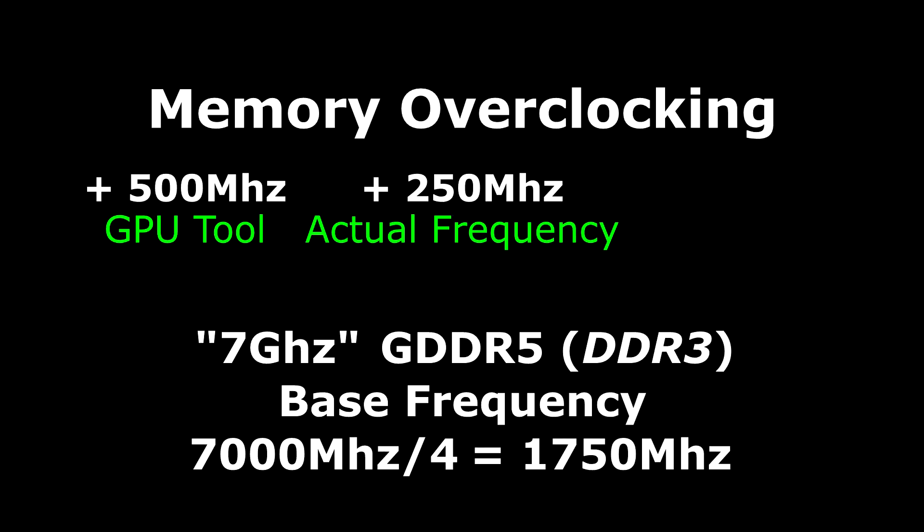When you overclock plus 500 megahertz you're getting two things: you're getting plus 250 megahertz shown in your overclocking tool, and an effective one gigahertz overclock on the memory.